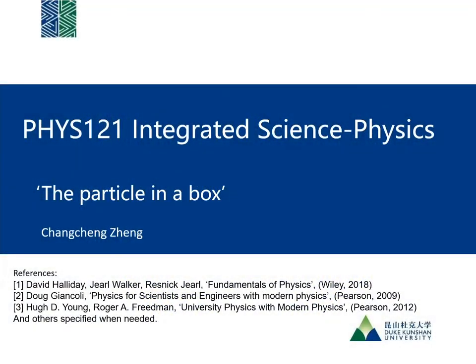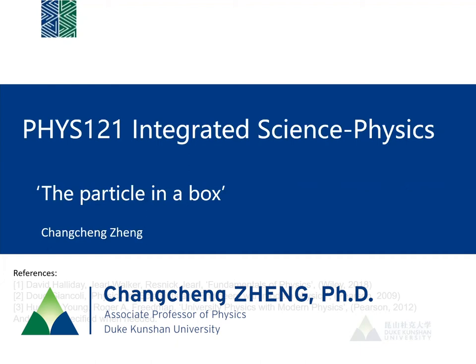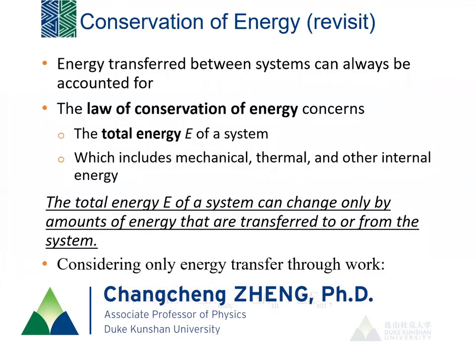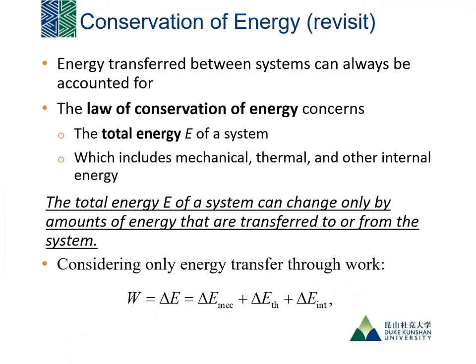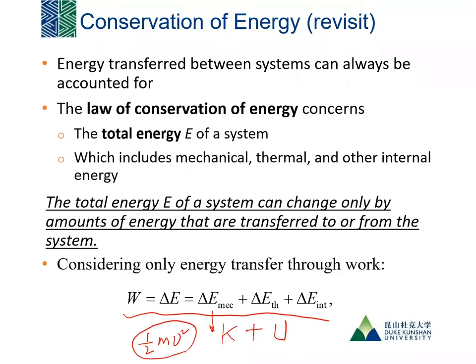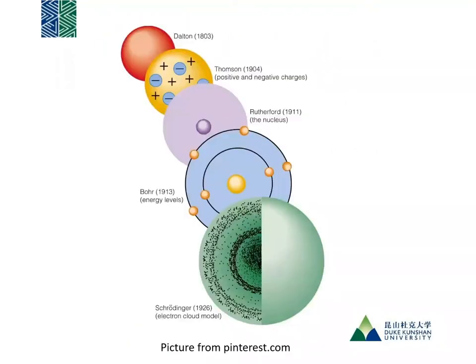In this video, we try to extend the idea of energy, as we learned in Newtonian mechanics, to the atomic scale. We review the law of conservation of energy first — energy doesn't disappear; it can change from one form to another, or transfer from one object to another. What happens if you go down to the scale of atoms? Atoms can also be divided further into fundamental particles.